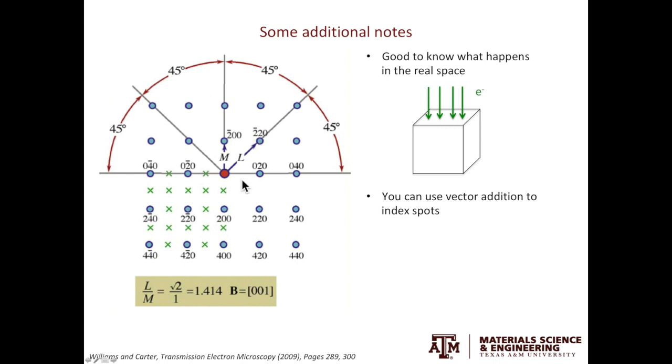For example, you have the O2O g-vector to the right, and you have the 2 bar OO g-vector to the top. If we use O2O plus 2 bar OO, that gives us 2 bar 2 O.